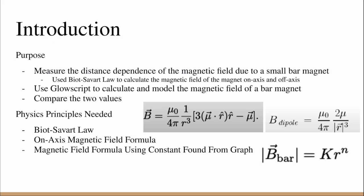Some physics principles that we'll be needing are the Biot-Savart law, which is the top left picture, the on-axis magnetic field formula shown at the top right, and the magnetic field formula using the constants found from the graph, which is the bottom right picture.